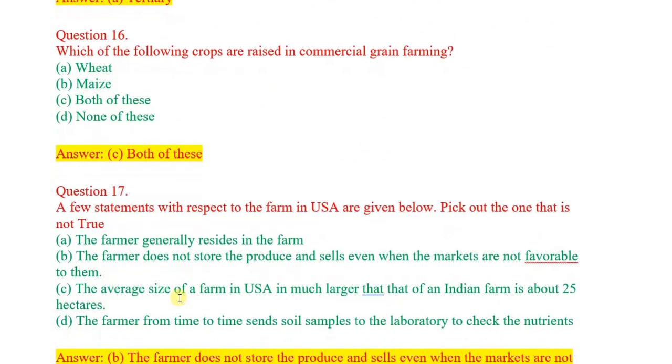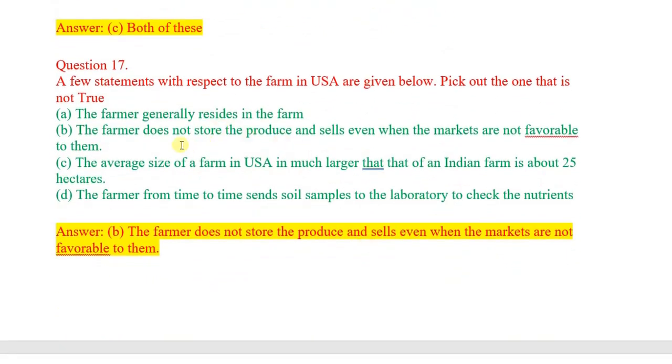Question number 17: A few statements with respect to the farms in USA are given below. Pick out the one that is not true. Correct answer: option B. A farmer does not store the produce and sells even when the markets are not favorable to them.